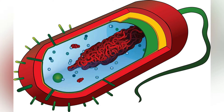A pilus is a hair-like appendage found on the surface of many bacteria and archaea. The terms pilus and fimbria can be used interchangeably, although some researchers reserve the term pilus for the appendage required for bacterial conjugation. All pili in the latter sense are primarily composed of pilin proteins, which are oligomeric. Dozens of these structures can exist on the bacterial and archaeal surface.